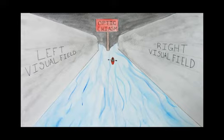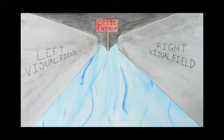At the optic chiasm, the signals split, such that images from the left visual field head to the right brain, and images from the right visual field head to the left brain.